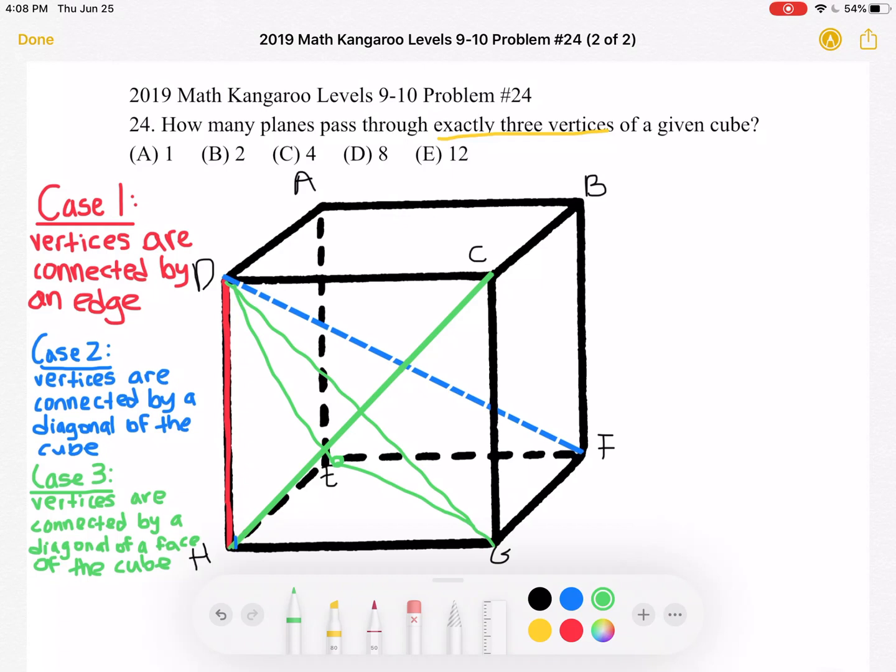So for the face d, c, h, g we have four planes, so four planes per face and we have six faces so four times six is 24 but as you may have noticed we over counted.